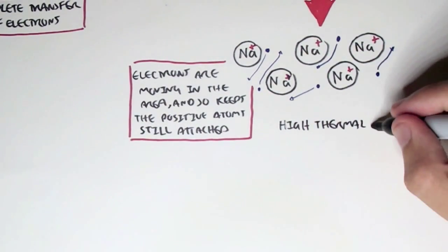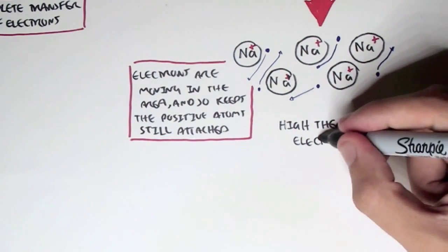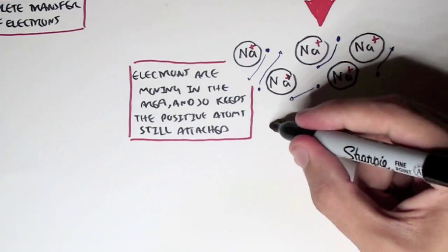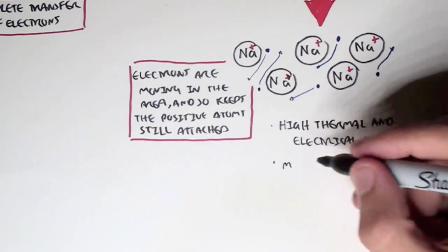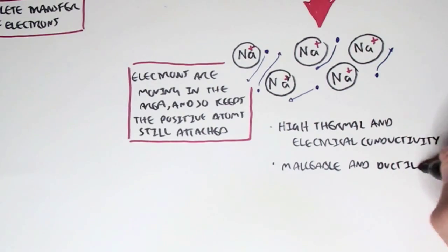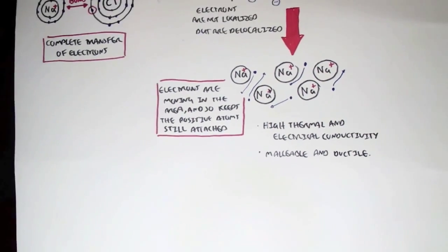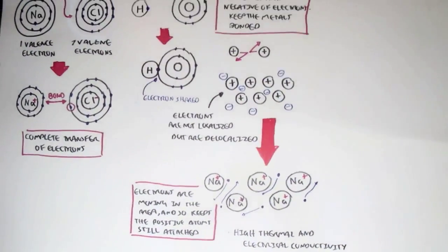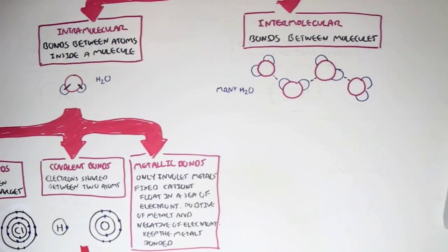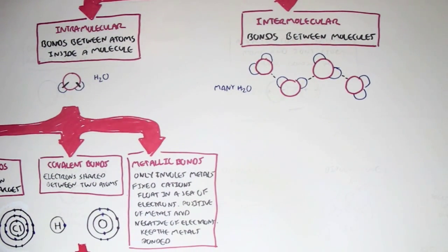This movement of electrons is responsible for the chemical properties of metals — being highly thermally and electrically conductive because of the free electrons, as well as being malleable and ductile. It should be noted that metallic bonds are not as strong as ionic bonds, so ionic bonds are the strongest of the three intramolecular bond types.